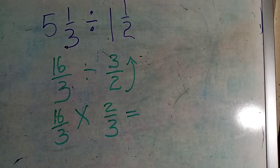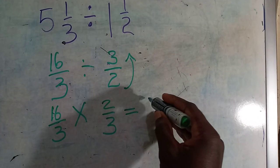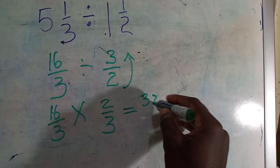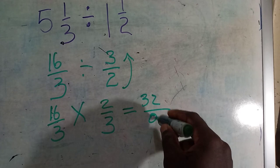Then you multiply across. There's nothing to cross multiply, so you multiply across. 16 times 2 gives you 32. 3 times 3 gives you 9.